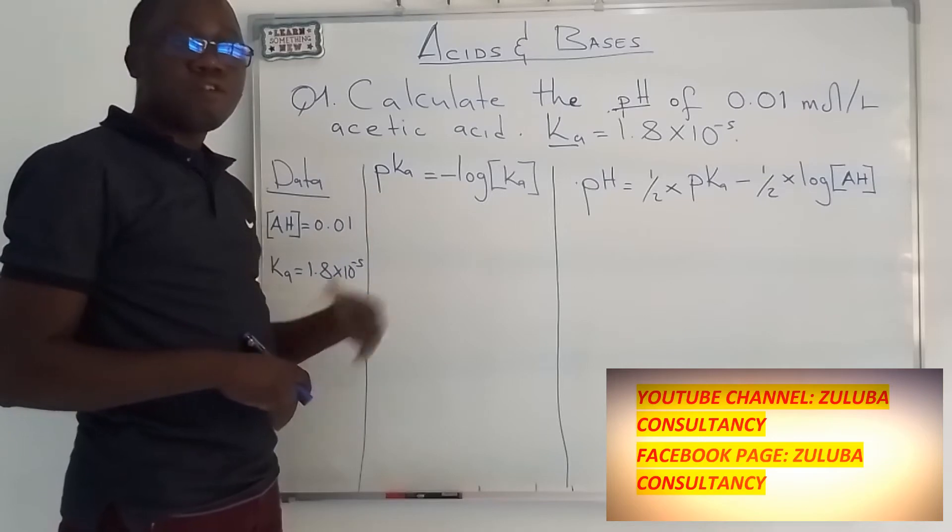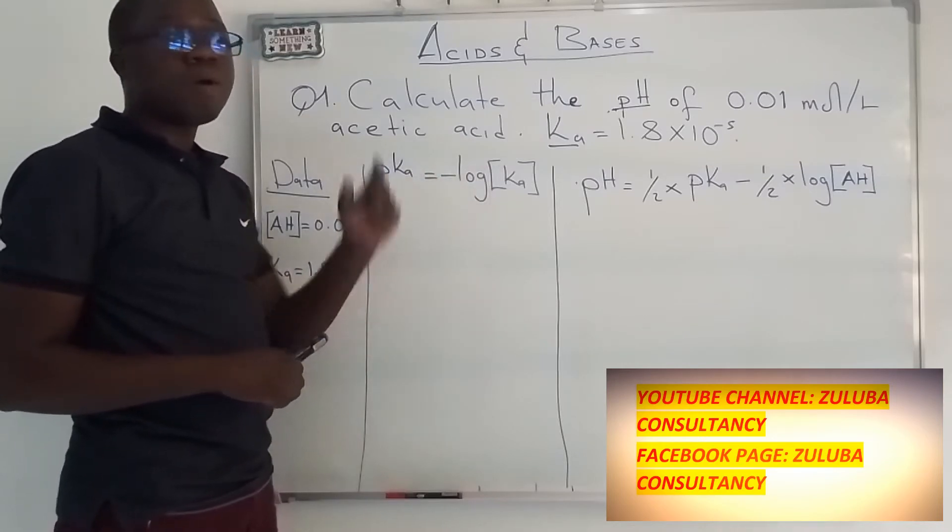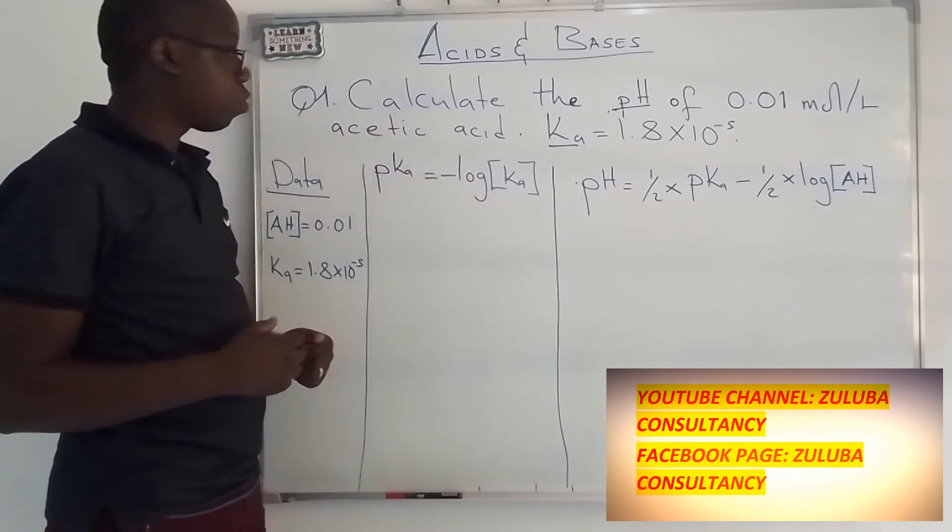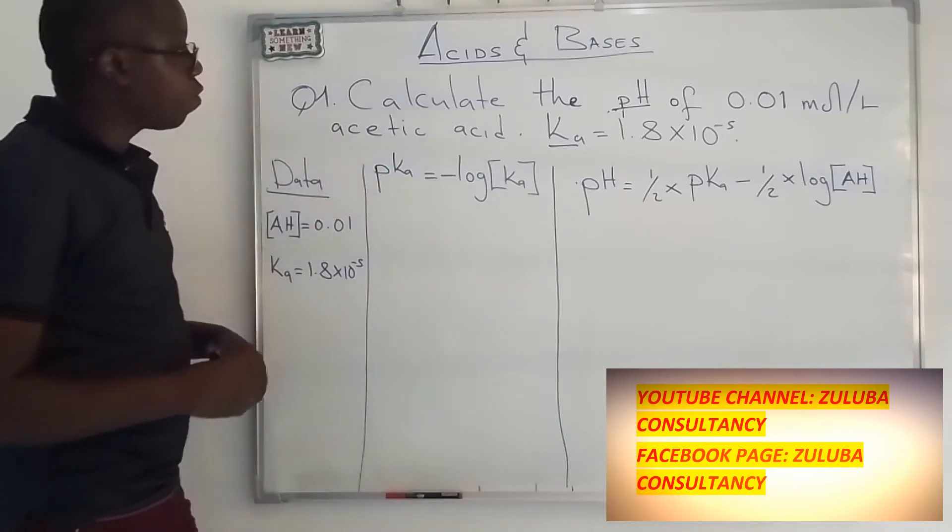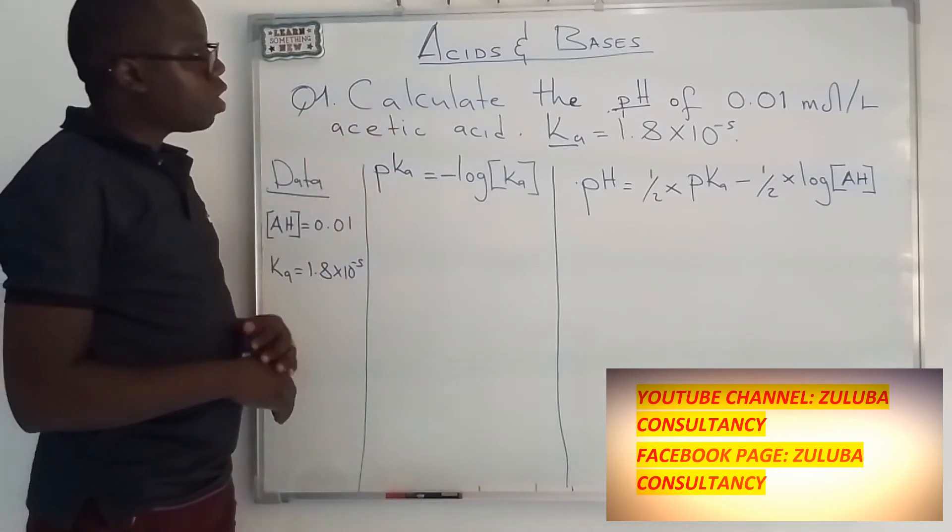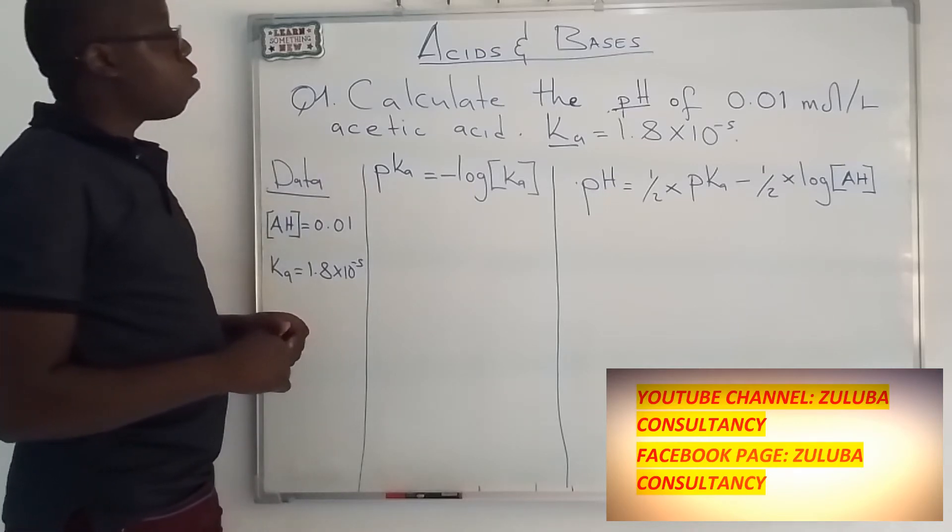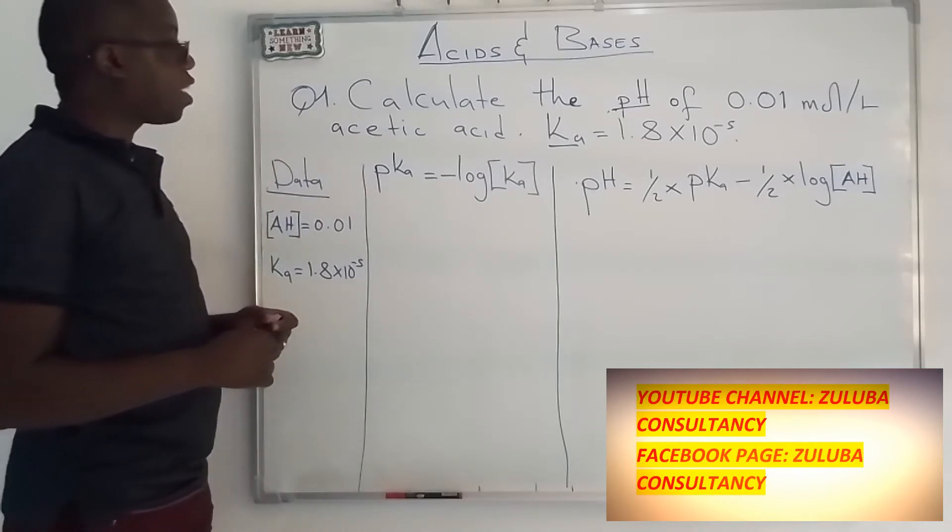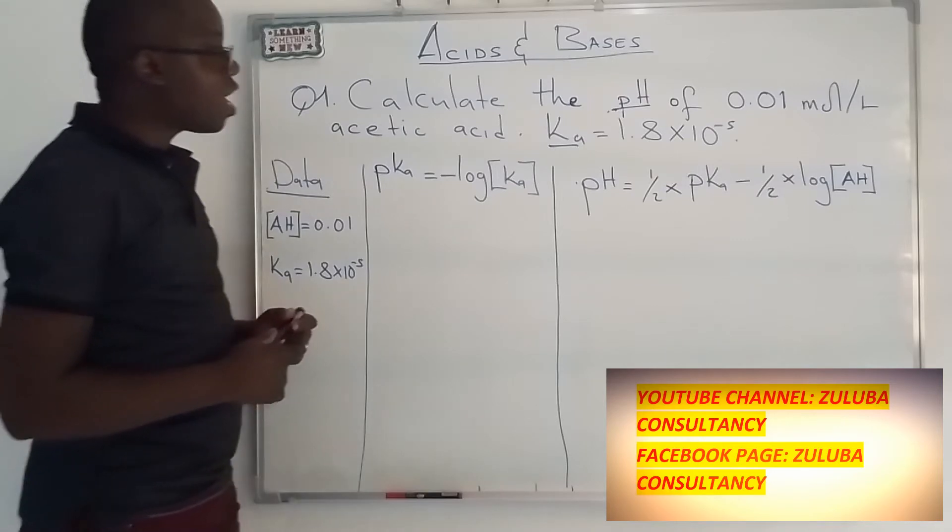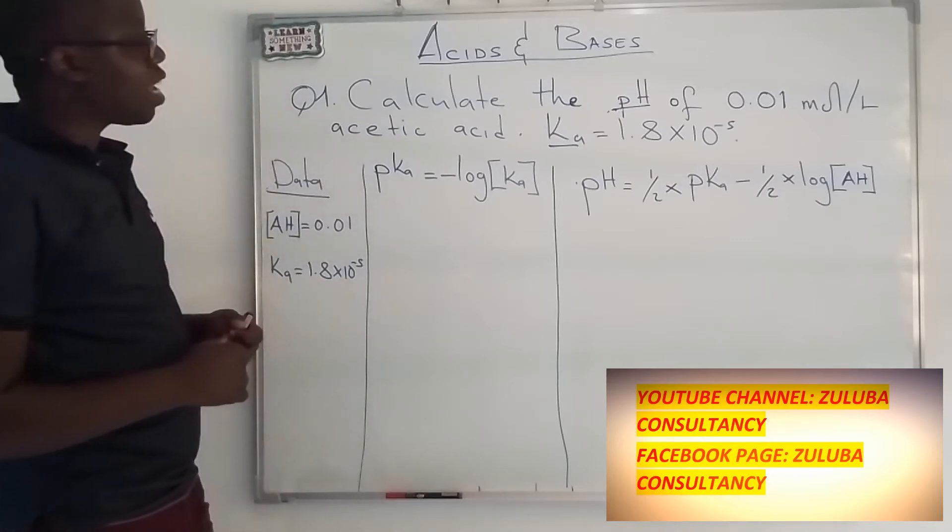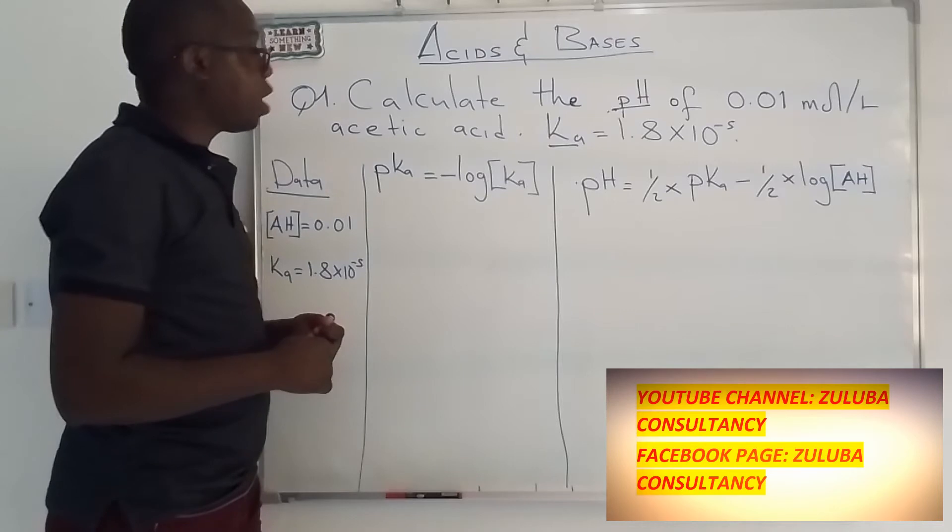And if you find this video helpful, please like it. So let's see the question that we have. The question reads: calculate the pH of 0.01 molar per liter of acetic acid where the Ka value is 1.8 times 10 to the power negative 5.